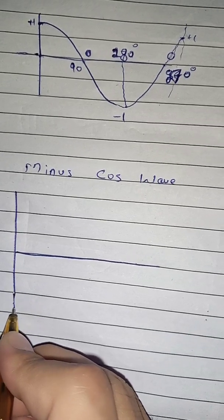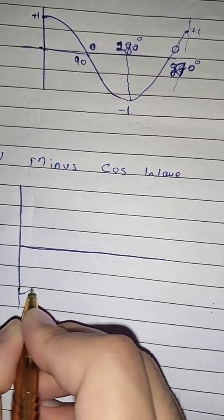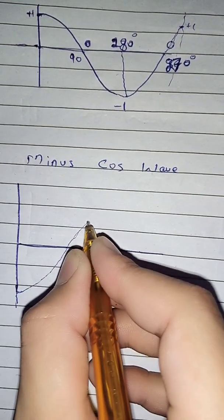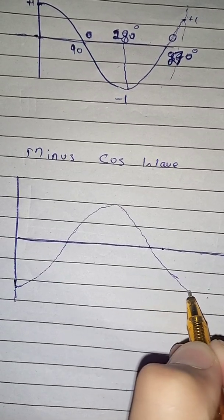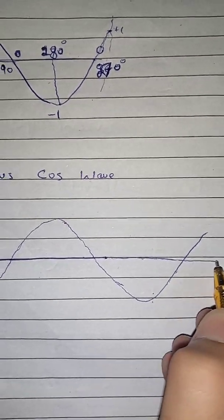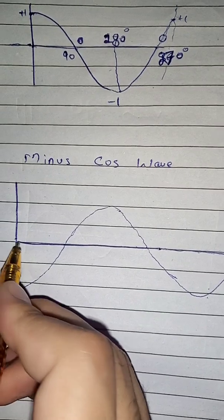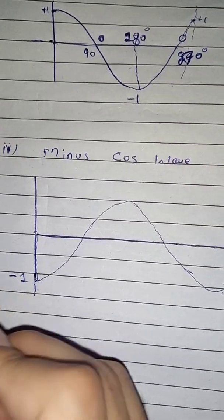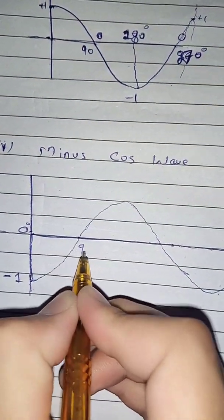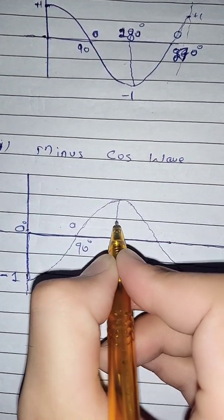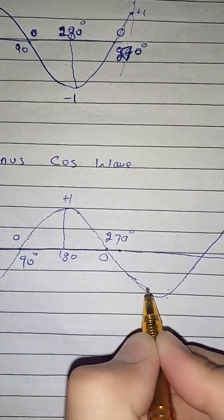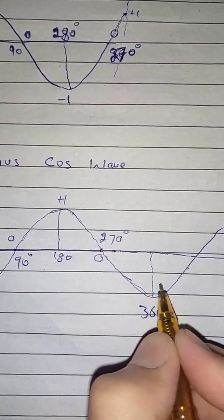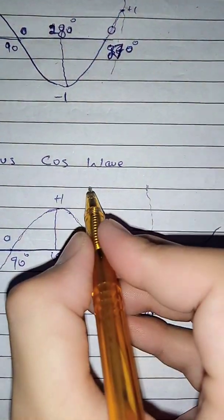The minus cosine wave gives us the value of -1 at 0 degrees. At 90 degrees its value is 0, at 180 degrees its value is +1, at 270 degrees it again reaches 0, and at 360 degrees it returns to -1. This completes one full cycle, which we refer to as lambda.